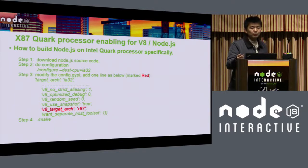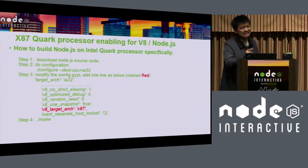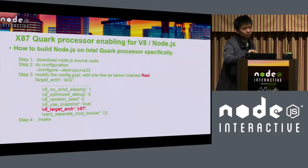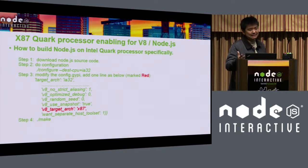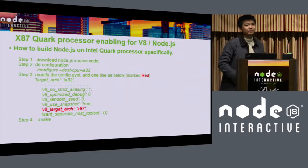To run Node.js on a Quark processor, you need to do it manually because it's not an officially supported platform. You need to set the target CPU as ia32 and change the target architecture flag manually by adding the target-arch setting. After that, you can build Node.js and run it on the Quark processor. That's all — any questions? Thank you.